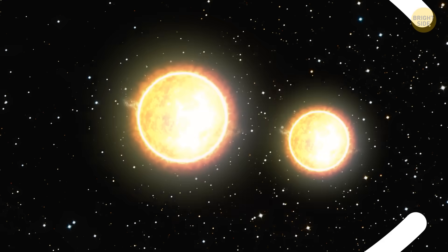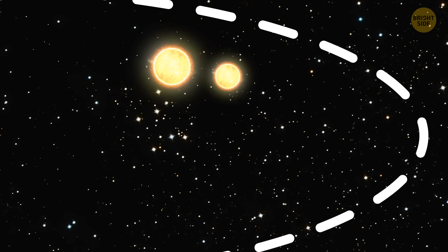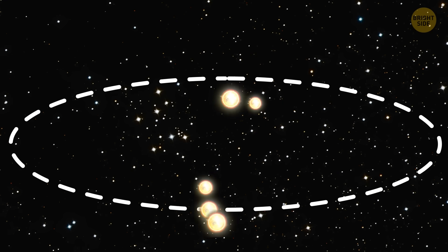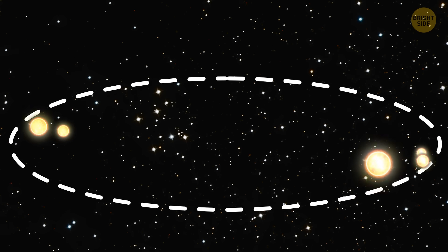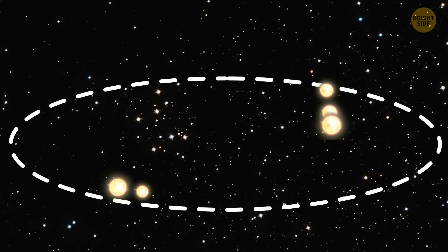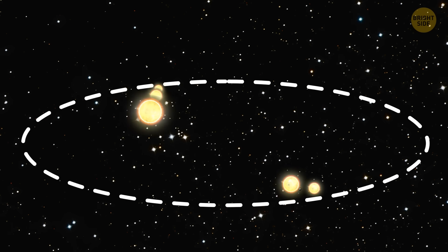But they all orbit around a common center of gravity. With all these interactions, it's a wonder they don't collide and create one big bright mess in the sky.